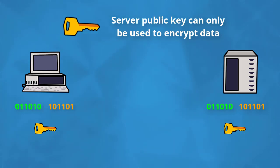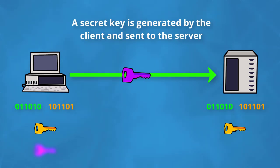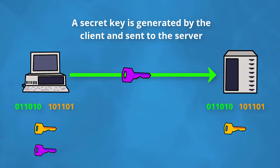Anyone can see the public key as it can only be used to encrypt data, not decrypt it. The client then generates a secret key which is encrypted using the server's public key and sent over.